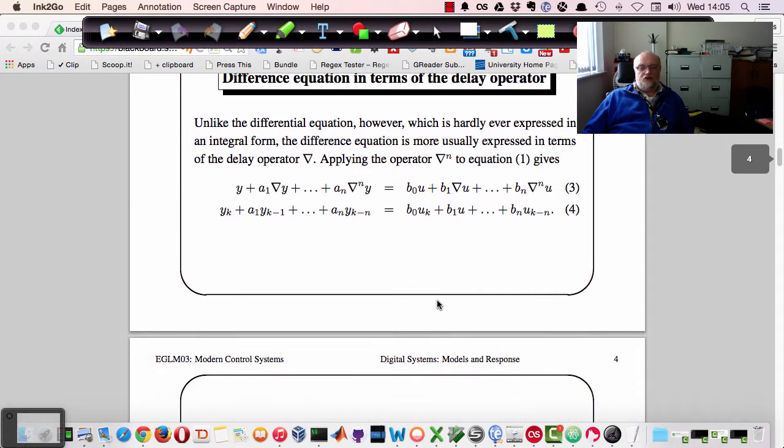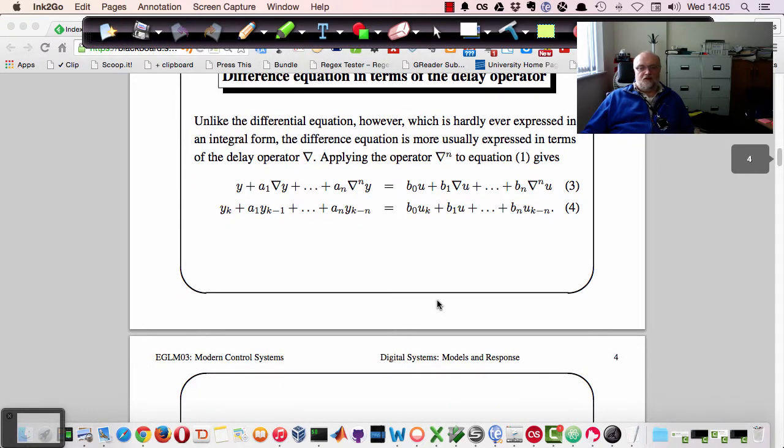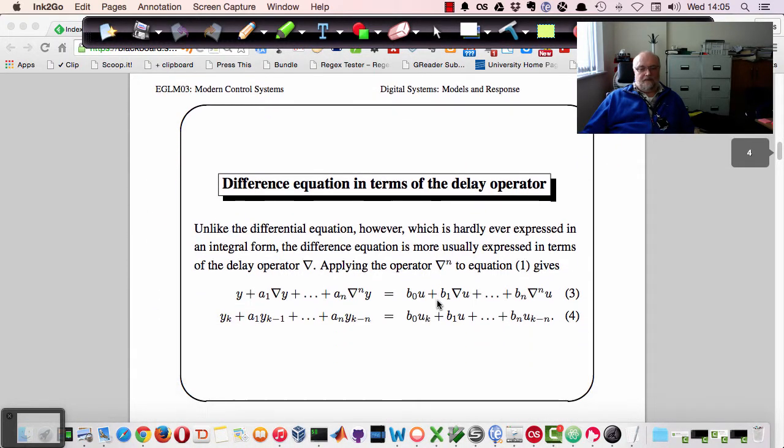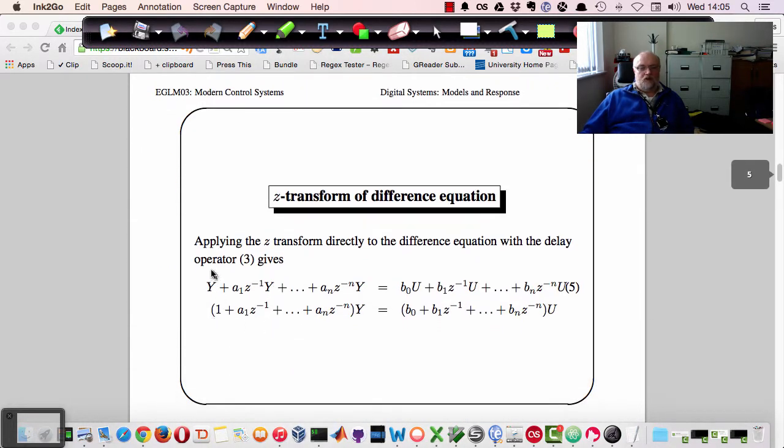So with this equation, we were better able to do the z-transform because from the definition of the z-transform, y k minus 1, for example, is the transform y times z to the minus one. So we can just write down the transform variable using this normal trick of converting lowercase to uppercase to represent the transform variable.